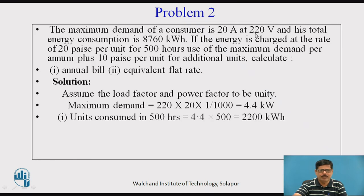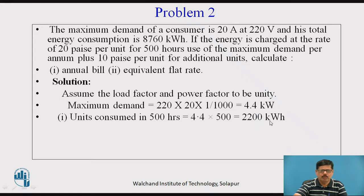Therefore, the maximum demand will be equal to V into I — 220 volts into 20 amperes — with power factor assumed as 1, divided by 1000 to get kilowatts. So 220 into 20 divided by 1000 equals 4.4 kW. Now, units consumed in 500 hours: the total consumption is 8760 kWh. For the first 500 hours, charges are 20 paise, and for the remaining, it is 10 paise per additional unit. Therefore, units consumed in 500 hours = 4.4 into 500, which equals 2200 kWh.